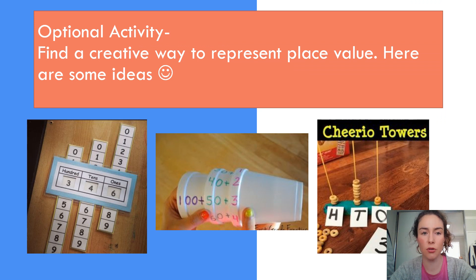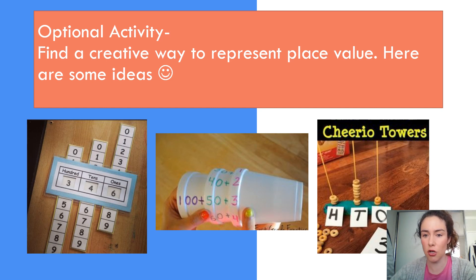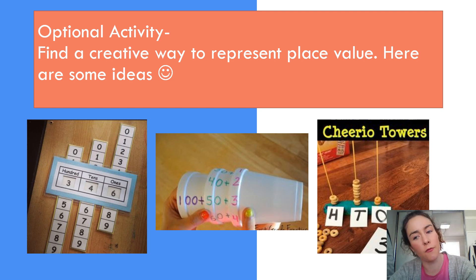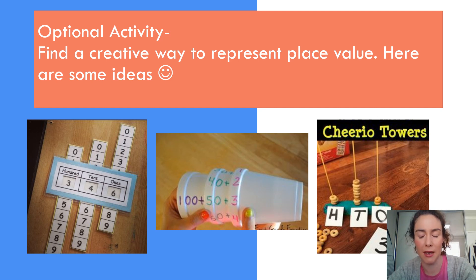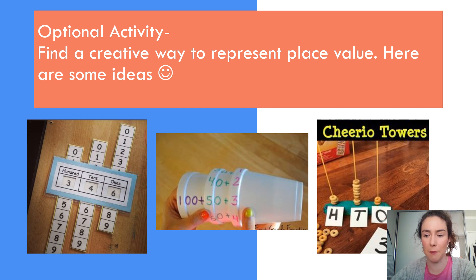Your optional activity today is to find a creative way to represent place value. Here are some ideas: Fruit Loops or similar cereal to make hundreds, tens and ones; using cups if you have some; or making something out of paper. You can also think of your own idea — I'm sure you have great ideas as well.